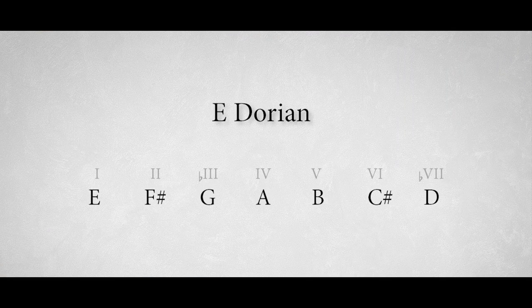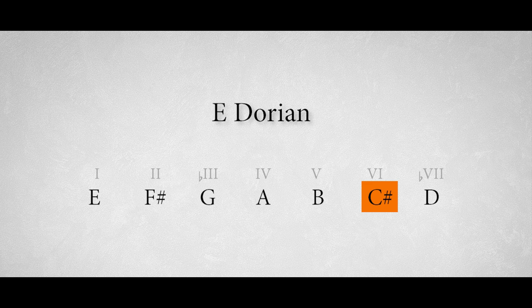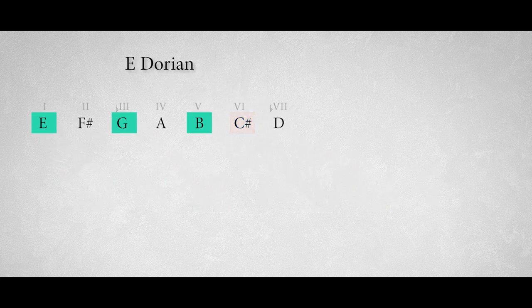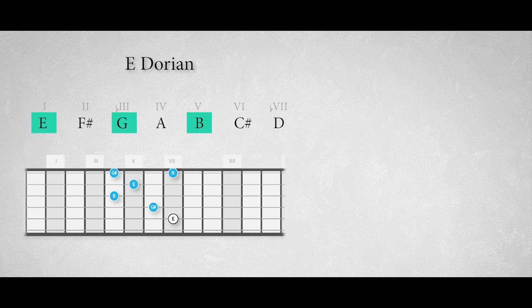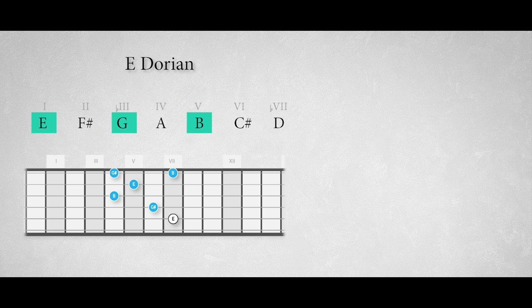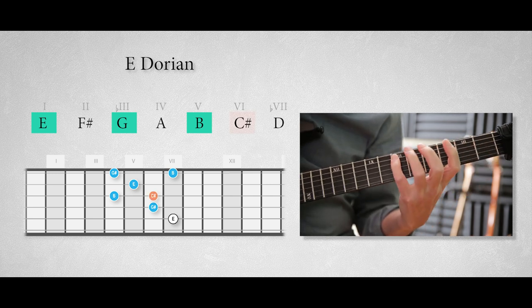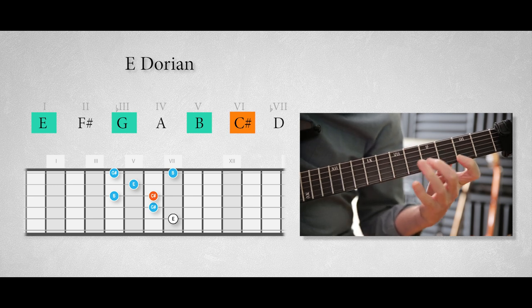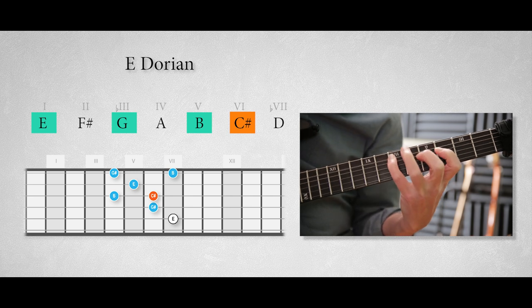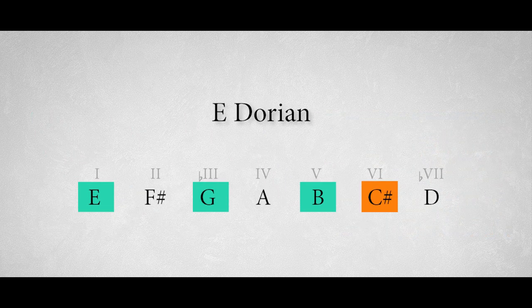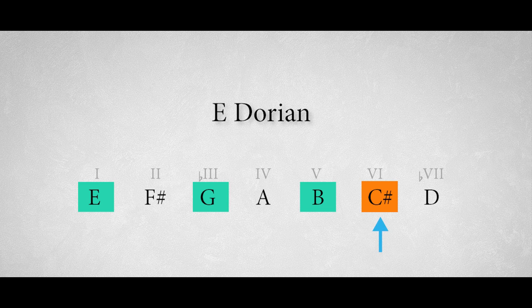When improvising in the, let's say, E Dorian mode or an E minor chord, we can add the characteristic raised sixth note to the E minor triad arpeggio. The raised sixth note in E Dorian is the note C sharp, and this is the minor triad arpeggio containing merely the root, the minor third and perfect fifth. Now we can add the note C sharp to this arpeggio to create an E Dorian flavored minor arpeggio. It's as simple as that. The only thing you should know is the specific note that triggers the modal sound.